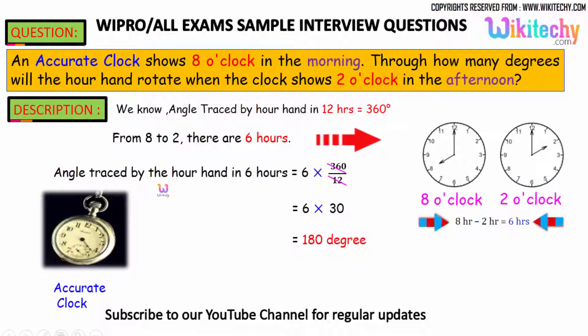Multiply by 6 to get the answer. The angle traced by the hour hand in six hours equals 6 × (360/12), which is 6 × 30, that's 180 degrees. The hour hand moves 180 degrees.